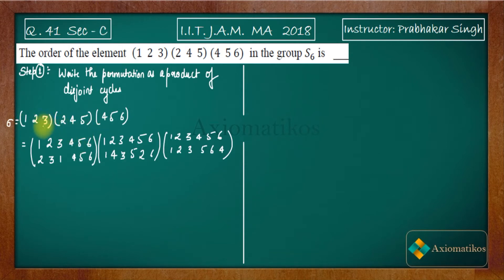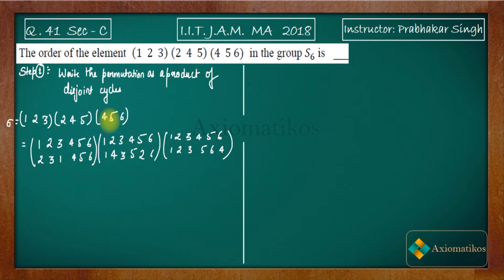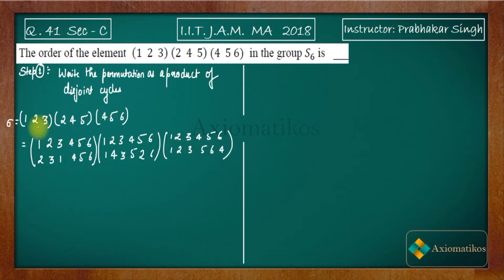Every cycle written in its standard form — for example, the cycle (456) in S6 means one maps to one, two maps to two, three maps to three, four maps to five, five maps to six, and six maps to four. This is how we convert a cycle into standard format. We apply this to all three cycles and write them as standard permutations.